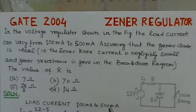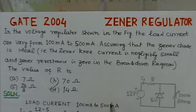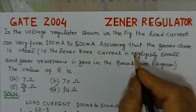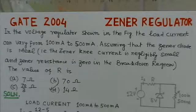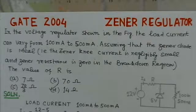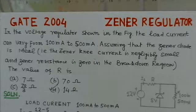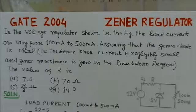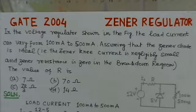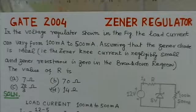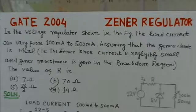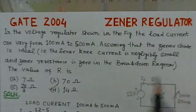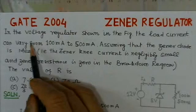The present GATE problem is of 2004 and it is under Zener regulators. It is the third one in a series of problems based on Zener regulators. Here in this problem, the load resistance is taken as variable and one has to find the suitable value of R so that the Zener regulator works for the entire load range.